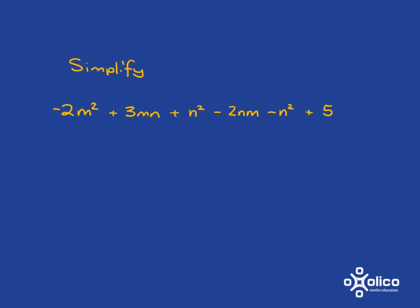If we're asked to simplify a monster like this, the first thing we need to do is identify the like terms. Here we have a term with m squared. Are there any other terms with m squared? If we look through, no, there are no other terms with m squared. Here we have 3mn. Are there any other terms with mn? We remember that mn and nm are the same thing, so yes, here is 2nm.